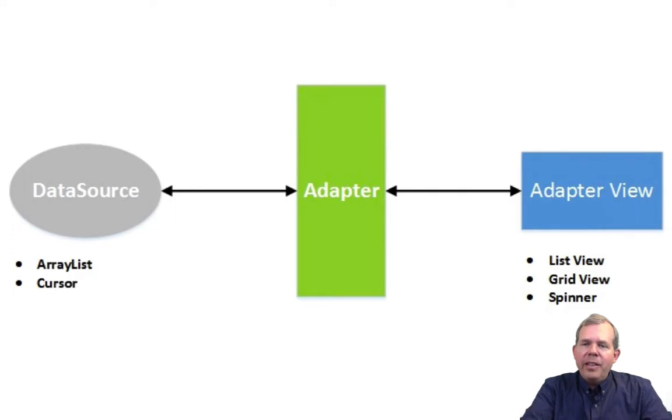And then the right side is the adapter view, which is the actual display of the GUI elements. So it's going to be a form or a list of items that you want to show on the application screen. And to make the bridge between those two is the adapter.